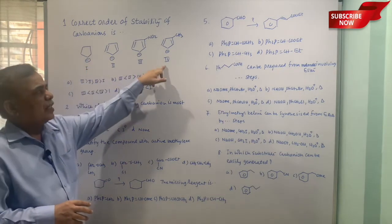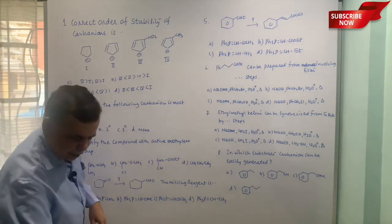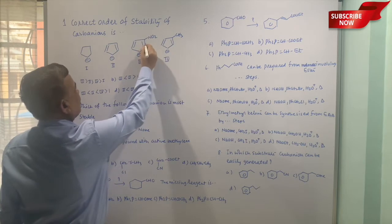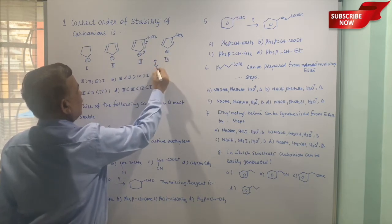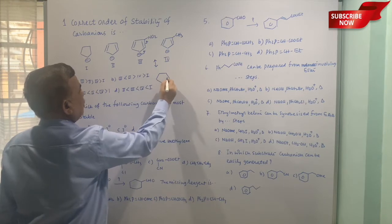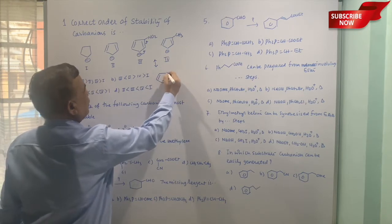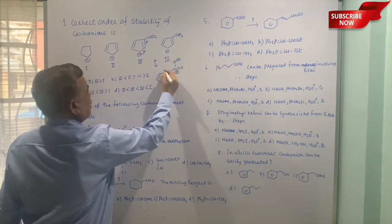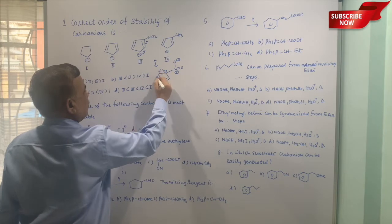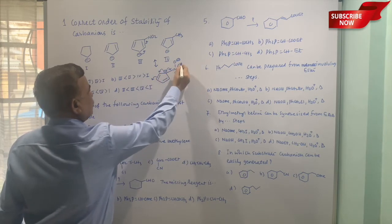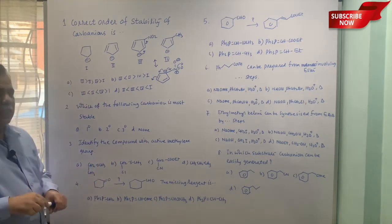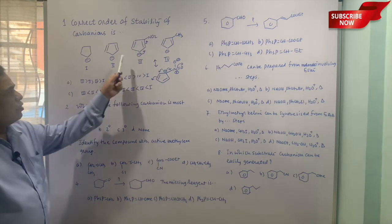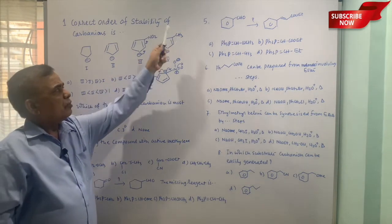Like here, lack of resonance will make this carbanion less stable. Here resonance is there, but amongst these three where the resonance would be higher, of course it will be higher when the charge comes here. So I'm just drawing the canonical structure of this carbanion. It will be in double bond, O minus. Now minus you can put it here as well as you can put it here. So NO2 group will facilitate the stability by virtue of resonance effect.